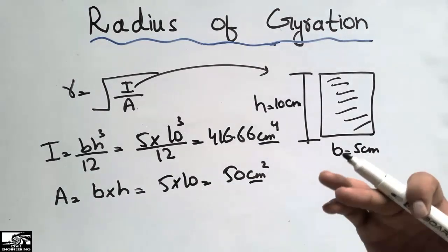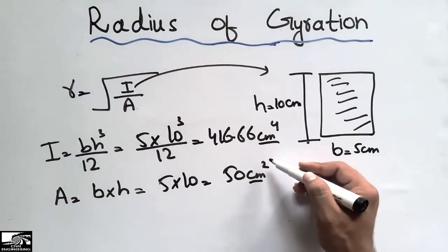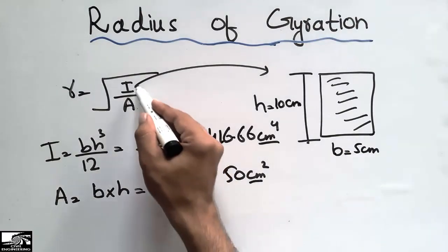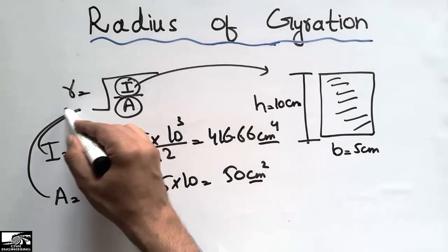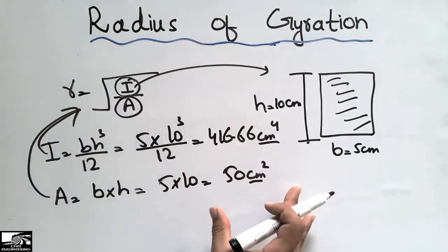Now put the moment of inertia and area values into this equation, and we will get the radius of gyration of this rectangular object.